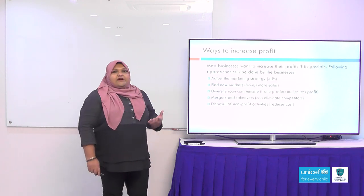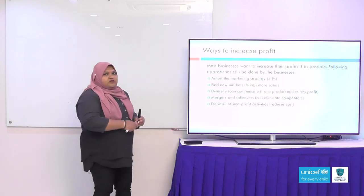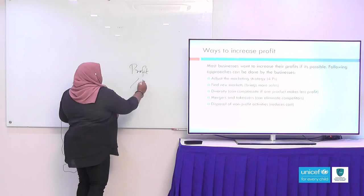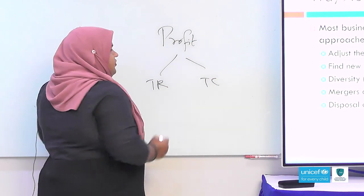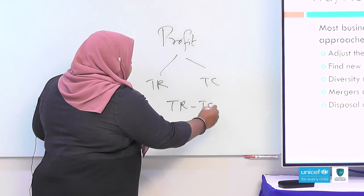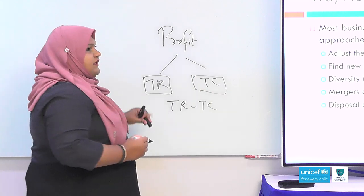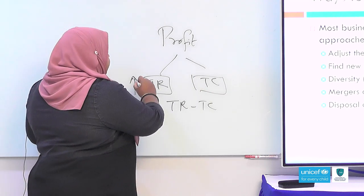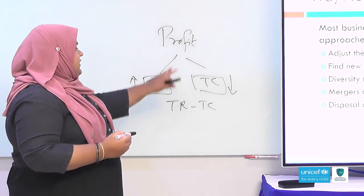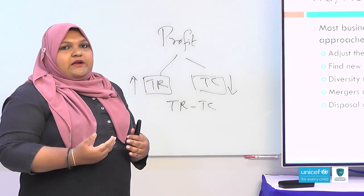Now, what are the ways to increase profit? If you look at the concept of profit, it includes two things: total revenue and total cost. The profit formula is simply this. So if you think about ways to increase profit, it is either by increasing total revenue or by reducing total cost. This simple concept will help you remember what it is about.